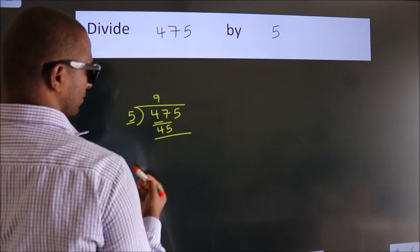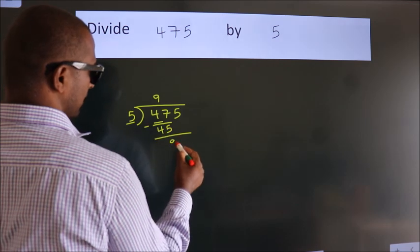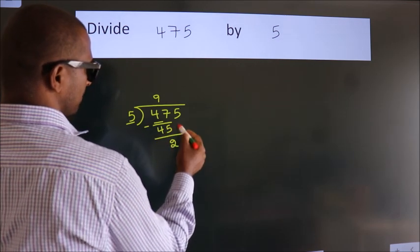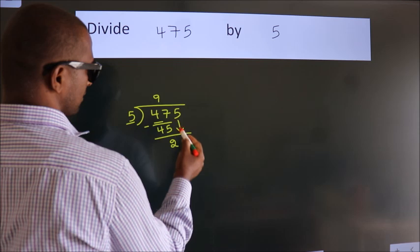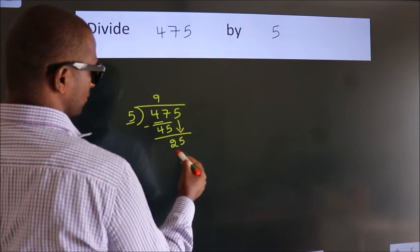Now we subtract and get 2. After this, bring down the next number. So, 5 down. So, 25.